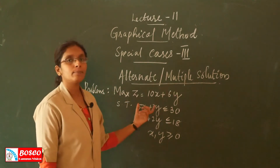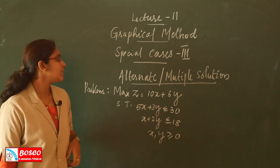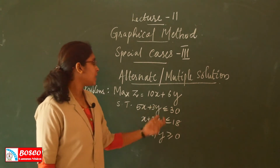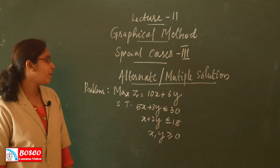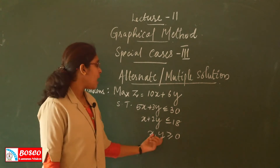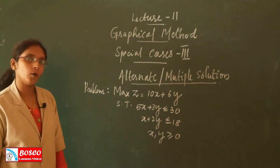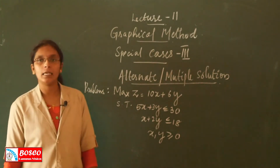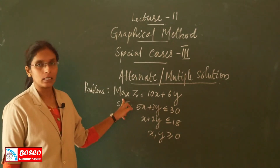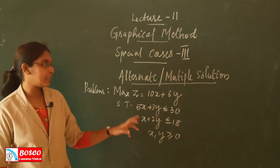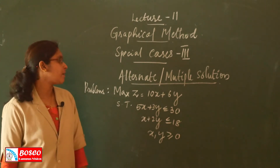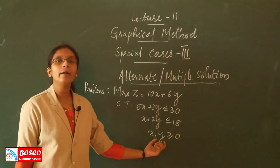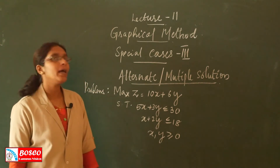Let us consider this problem. Maximizing Z equals 10X plus 6Y, subject to the constraints: 5X plus 3Y less than or equal to 30, X plus 2Y less than or equal to 18, and the non-negativity condition X, Y greater than or equal to 0. The optimization condition is the maximizing condition.